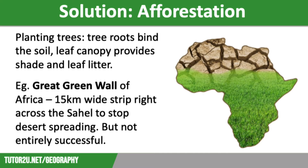The Great Green Wall is an African-led project with an epic ambition to go 8,000 kilometers as a natural wonder of the world across the entire width of Africa. Its goal is to provide food, jobs and a future for millions of people who live in a region on the front line of climate change. Once completed, the Great Green Wall will be the largest living structure on earth and a new wonder of the world.